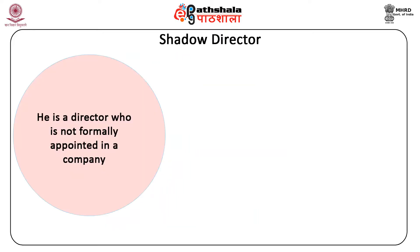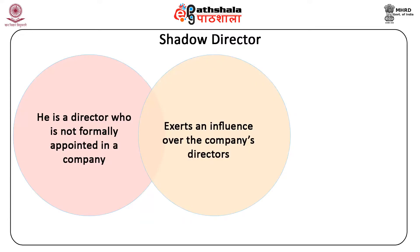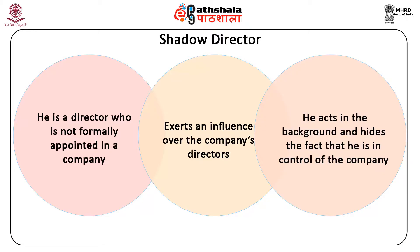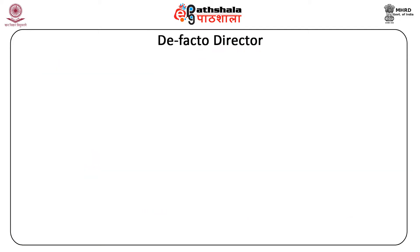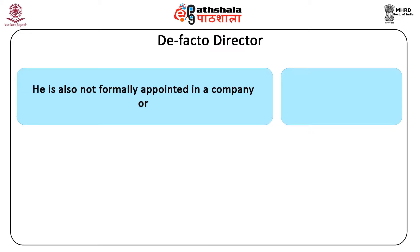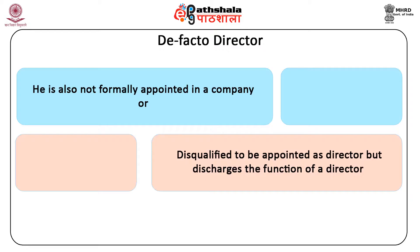A shadow director is not formally appointed in a company but exerts such an influence over the company's directors that other directors are accustomed to act in accordance with his instructions. He acts in the background and hides the fact that he is in control of the company. A de facto director is also not formally appointed in a company, or he may be a person who is disqualified to be appointed as director, but discharges the function of a director despite a lack of authority and right to so act.